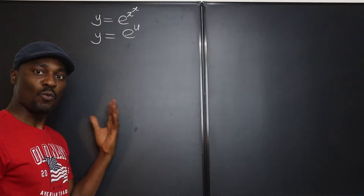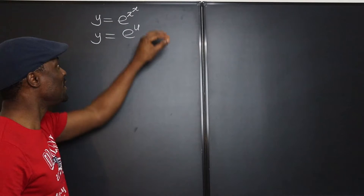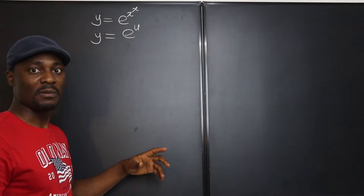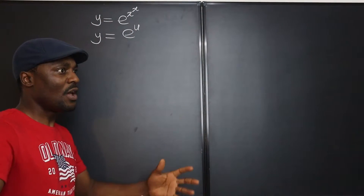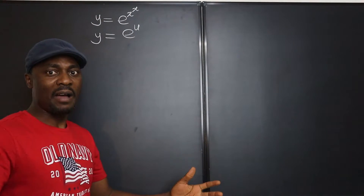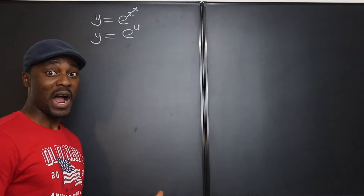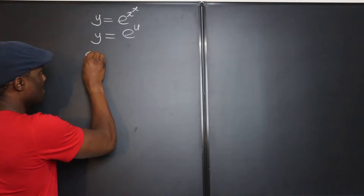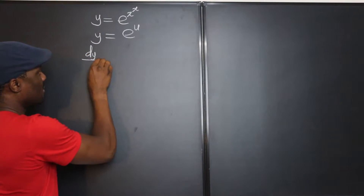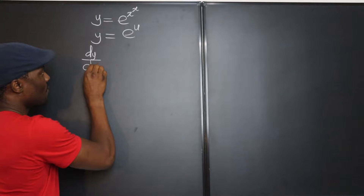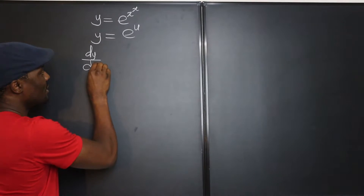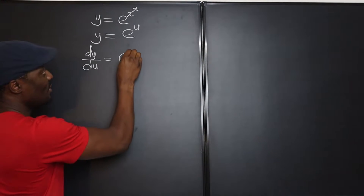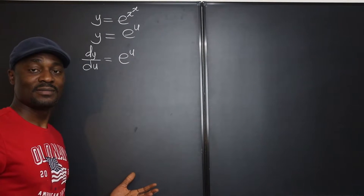Now, what is dy/dx? Let's say you didn't know about this and this was the problem. What is dy/du? Well, dy/du is just going to be e to the u. That's all.